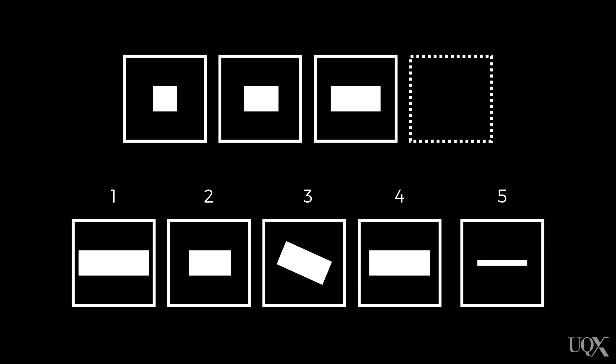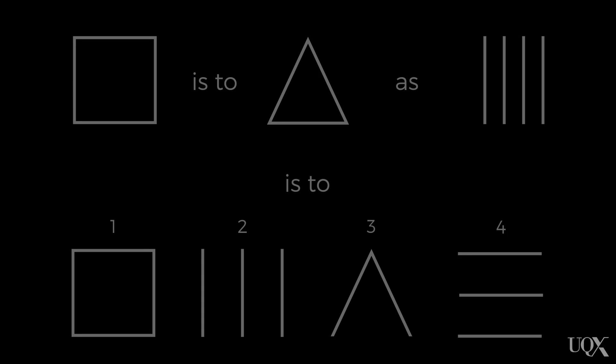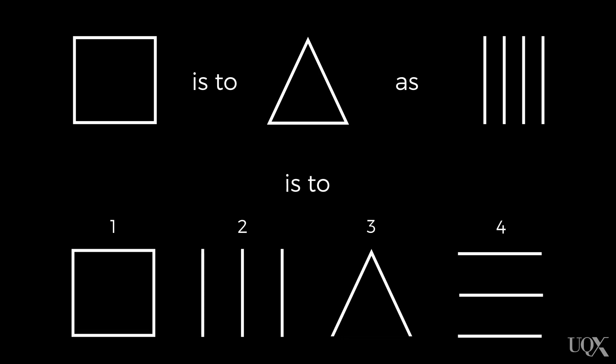Here's an example of some fluid intelligence items. These items are a little bit more extensive than just progressive matrices. For example, you have to pick which of these belongs — the answer is number four. There are also questions that assess analogies, but these don't require a lot of comprehension of cultural concepts. For example: a square is to a triangle, as four vertical lines is to? The answer is three vertical lines, because of the number of sides. A lot of these questions tap into different abilities, but they do it in a way that doesn't necessarily rely heavily on cultural knowledge.